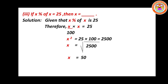Subdivision 3: If x% of x equals 25, then x equals blank. Given x divided by 100 into x equals 25, so x squared divided by 100 equals 25. Therefore x squared equals 2500, giving x equals the square root of 2500 equals 50. So x equals 50.